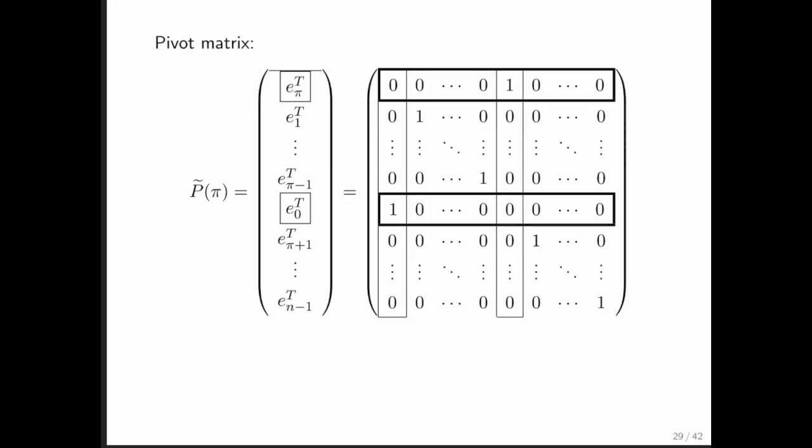And that matrix we're going to call a pivot matrix. And a pivot matrix is a permutation matrix except that it is only the first row and some other row indexed by pi that are different from the identity.